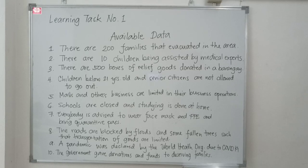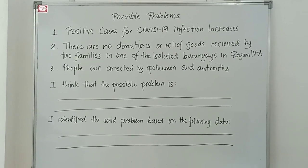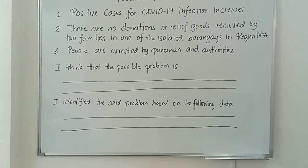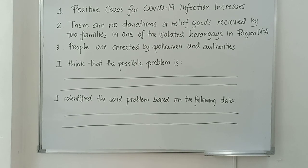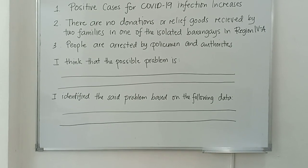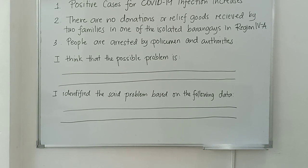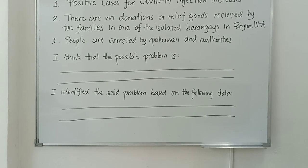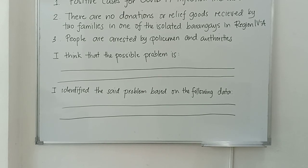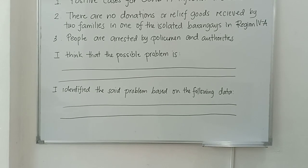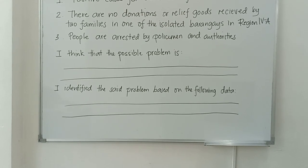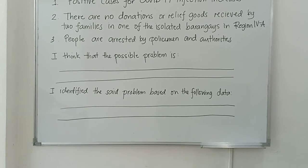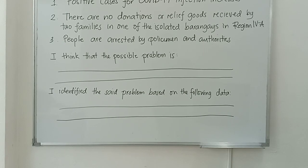Number ten: the government gave donations and funds to the deserving families. These are the possible problems. Number one: positive cases for COVID-19 infection are increasing. Number two: there are no donations or relief goods received by two families in one of the isolated barangays in Region 4A. Number three: people are arrested by policemen and authorities.